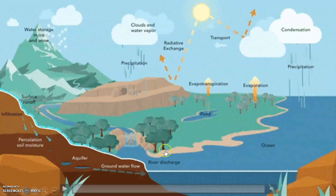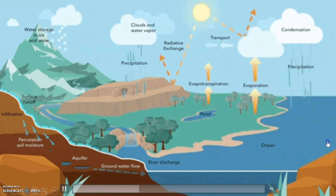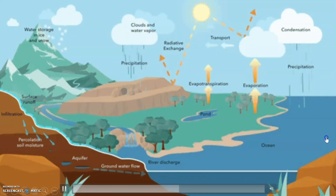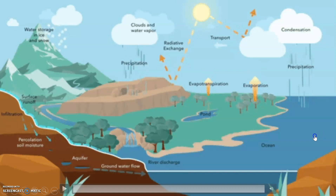Here is a complete process of the water cycle shown in one short video, in which you can see all the processes happening at once: precipitation, condensation, evaporation, transpiration, and evapotranspiration — everything in one go, which helps clarify the concepts we have already studied.